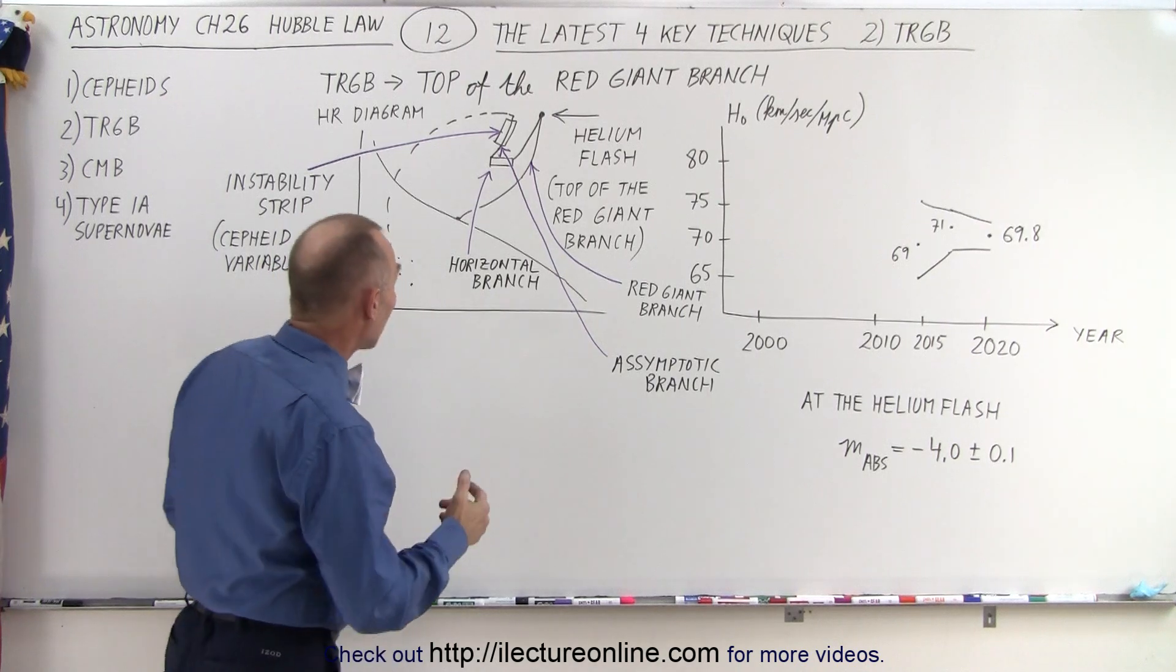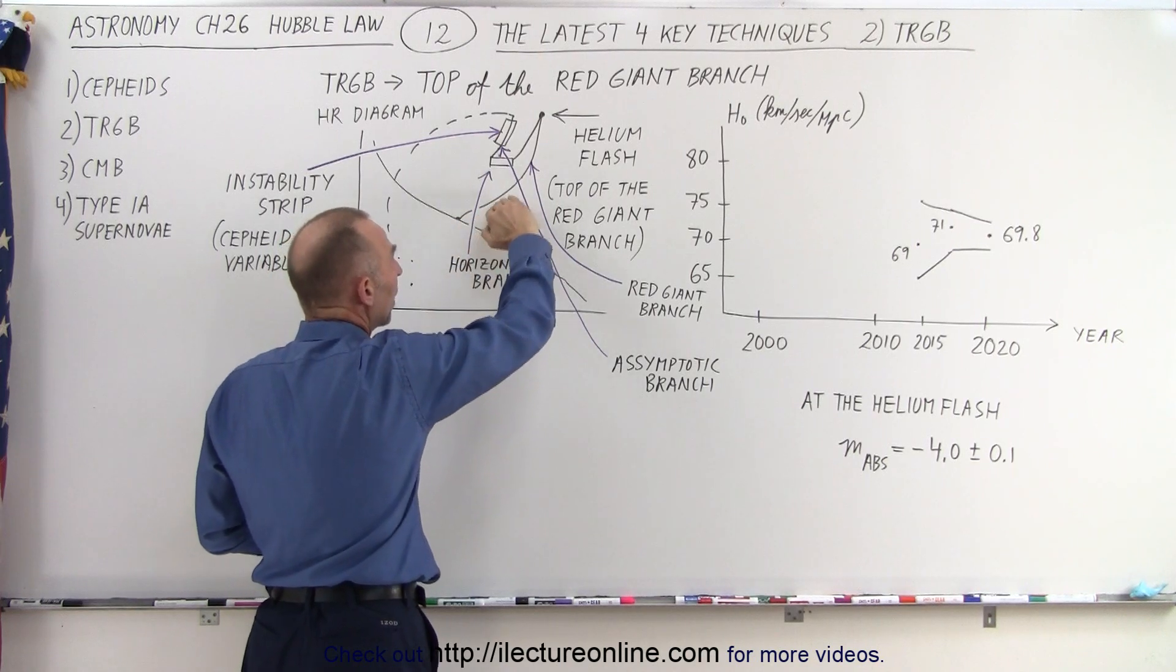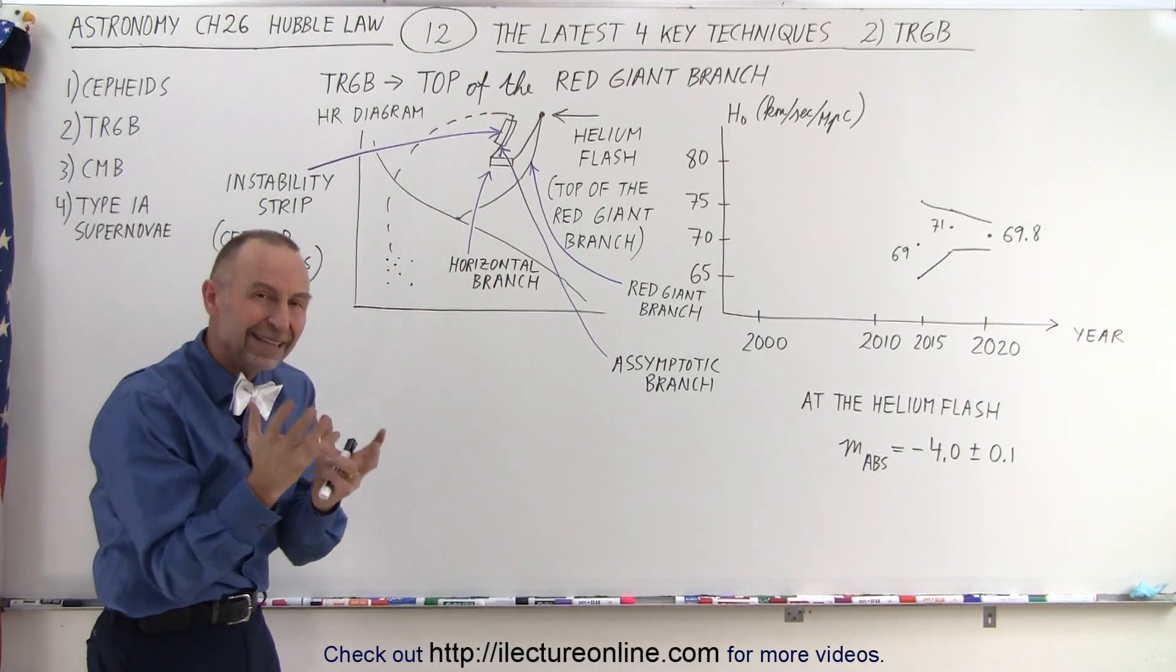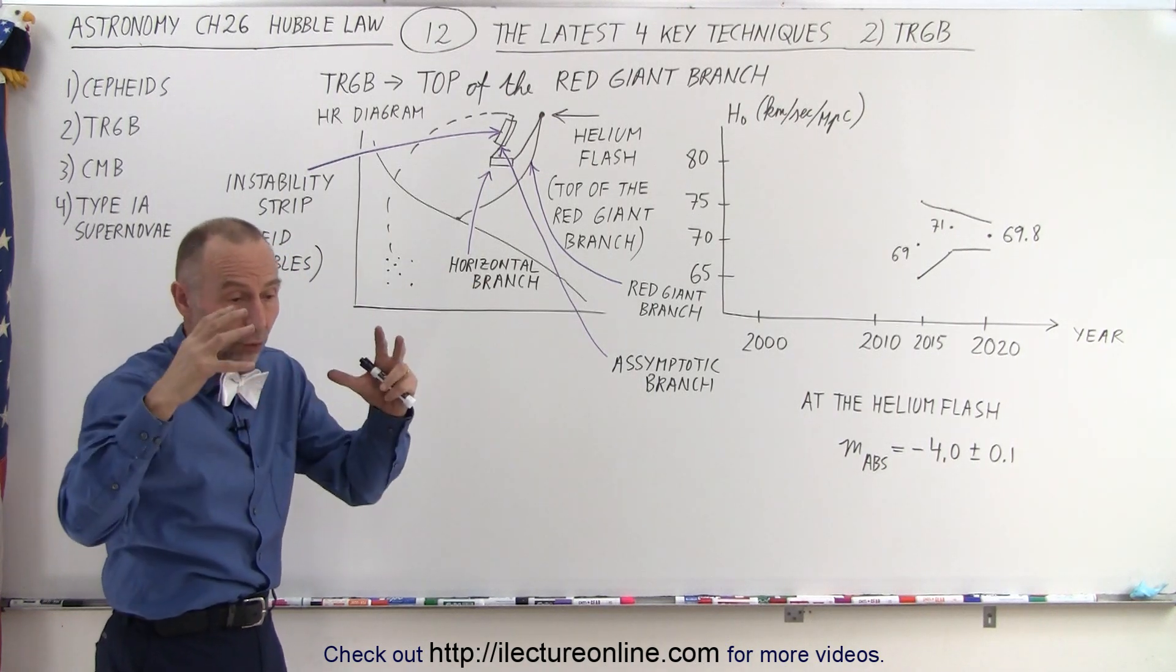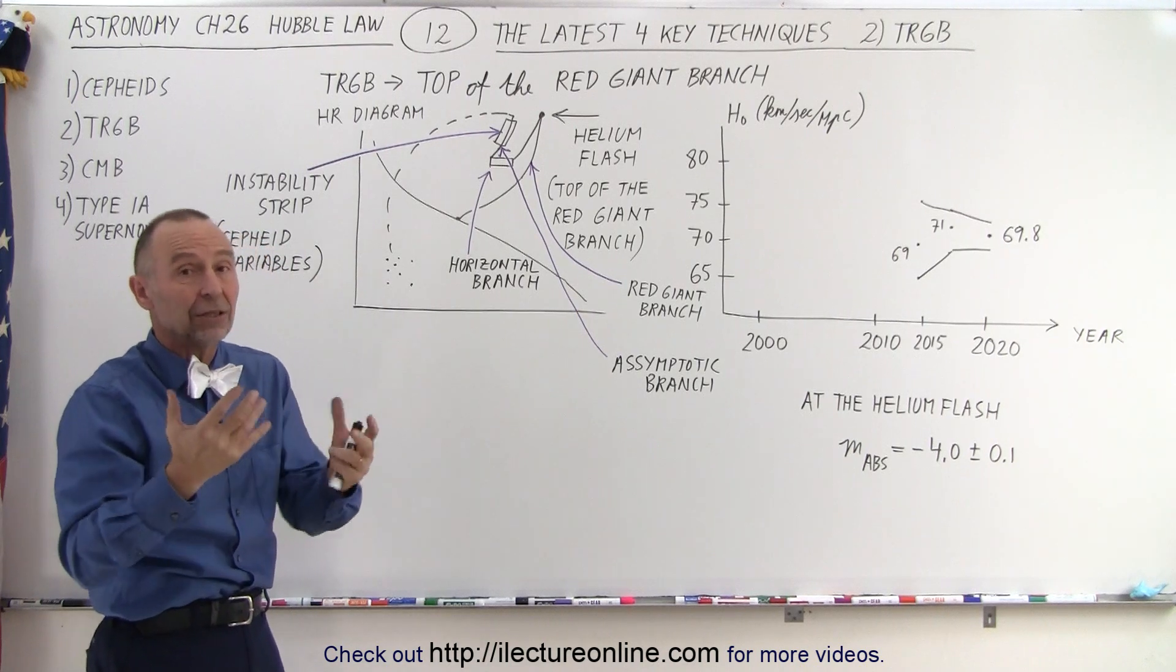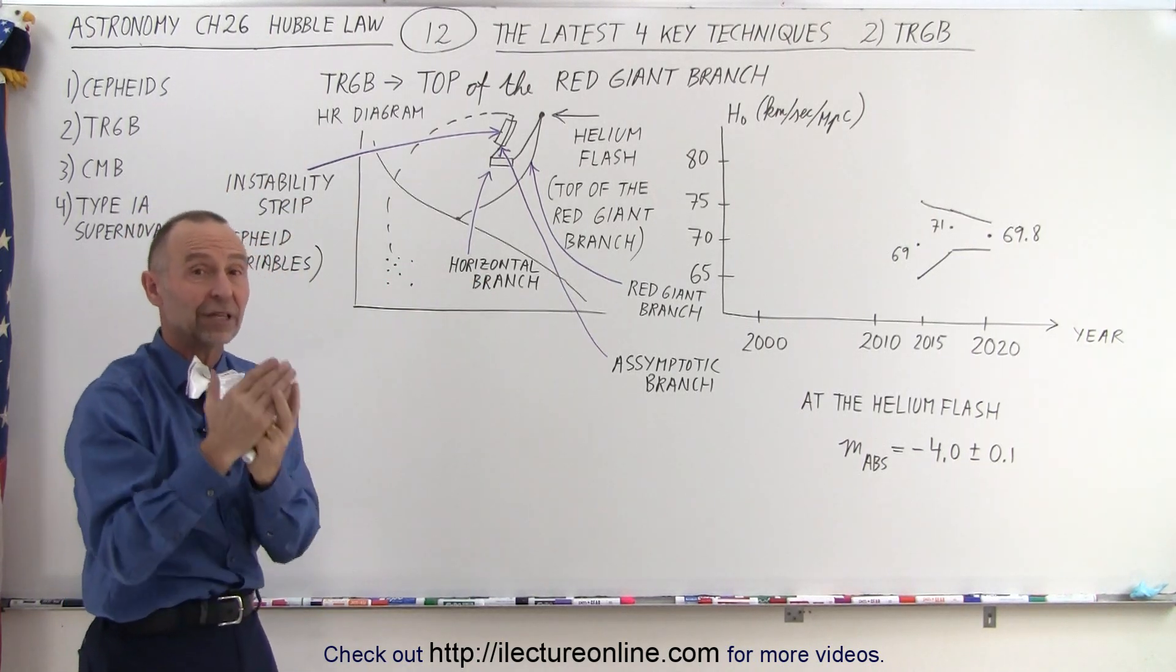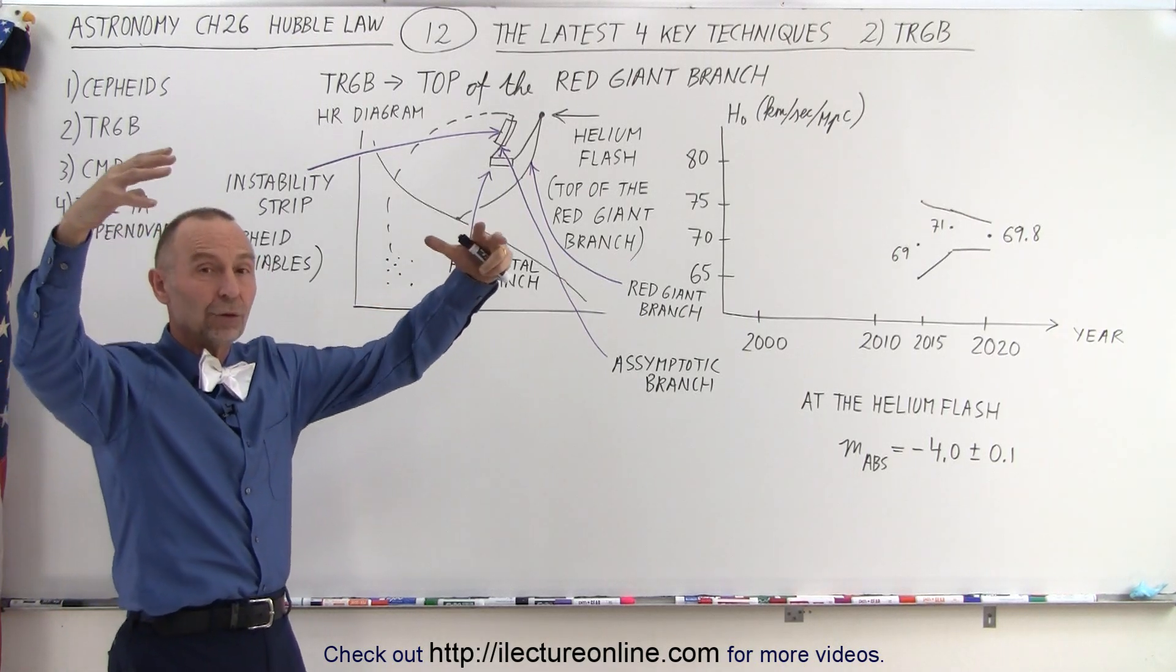It turns out that when a star leaves the main sequence and becomes a red giant, it starts moving up what we call the red giant branch and reaches all the way to the very top. At the very top, the core inside the star is collapsing because the hydrogen to helium burning has completed. The whole core is now filled with helium. There's nothing to keep the core going, so the core collapses, while the region around the core is now fusing hydrogen into helium, pushing the rest of the red giant out to enormous size.